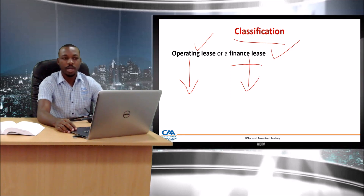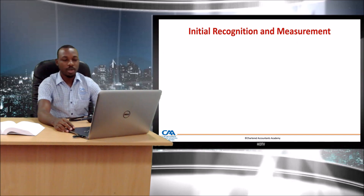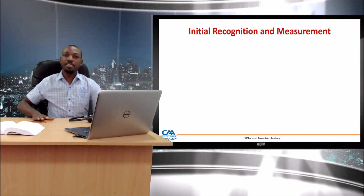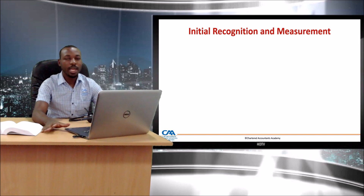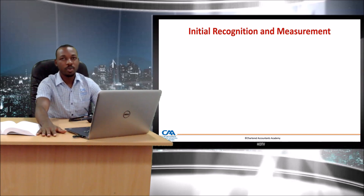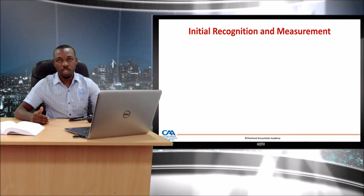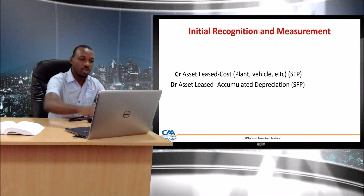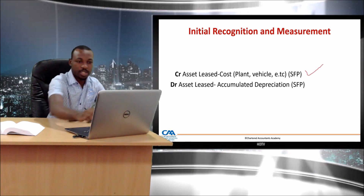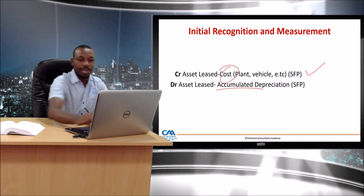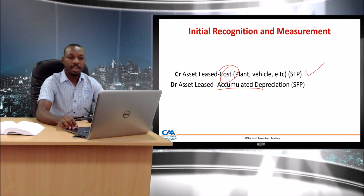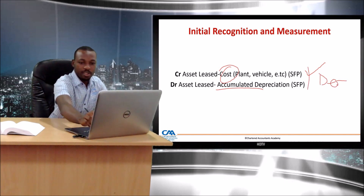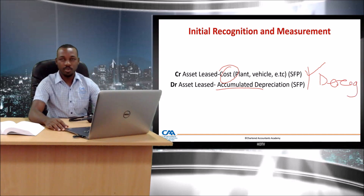If it is a finance lease — which is the common one — you are saying you have ceded all the rights related to this asset, all the significant risks and rewards, to the lessee. It means you no longer have an asset, so you cannot continue recognizing it in your books. The first thing to do is de-recognize that asset by crediting the cost and crediting the accumulated depreciation.